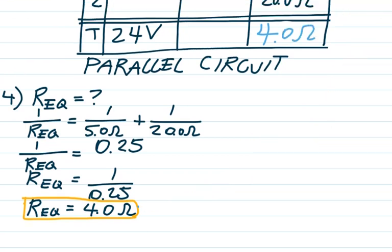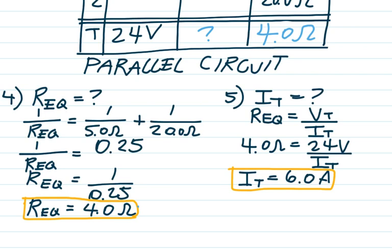The table now shows total voltage and total equivalent resistance, and number five wants the total current. With total voltage and total resistance, I can solve for total current using Ohm's law. Working out the math, the total current is 6 amps.